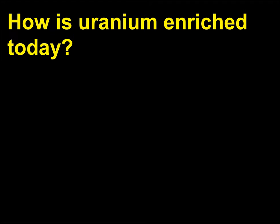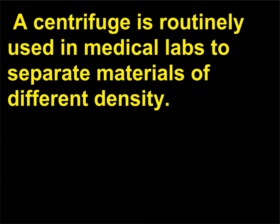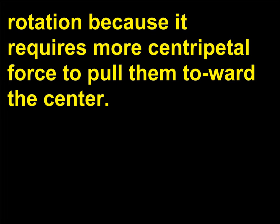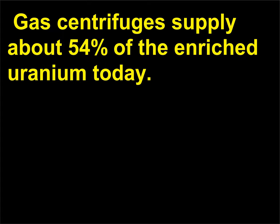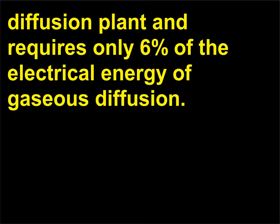How is uranium enriched today? Today ultracentrifuges are used for uranium enrichment. A centrifuge is routinely used in medical labs to separate materials of different density — the test tubes are spun rapidly and the denser materials move away from the center of rotation because it requires more centripetal force to pull them toward the center. A gas ultracentrifuge uses a rapidly rotating drum to separate UF6 with the two isotopes. Gas centrifuges supply about 54% of the enriched uranium today, and each centrifuge is a more effective separator than a stage in a gaseous diffusion plant, requiring only 6% of the electrical energy of gaseous diffusion.